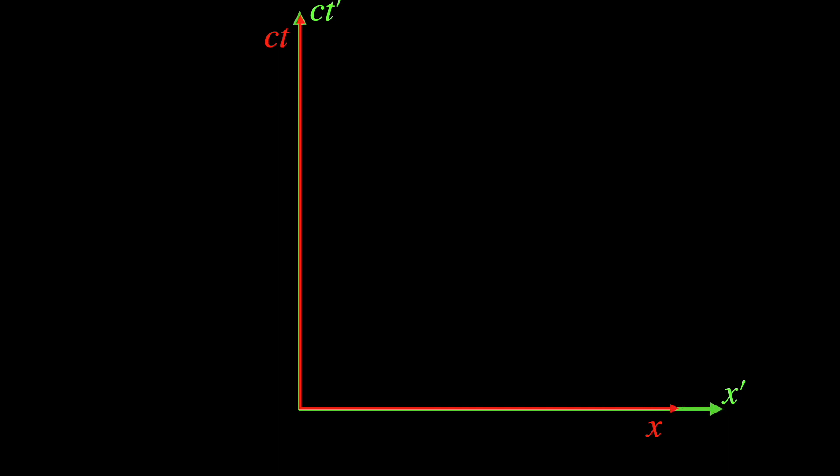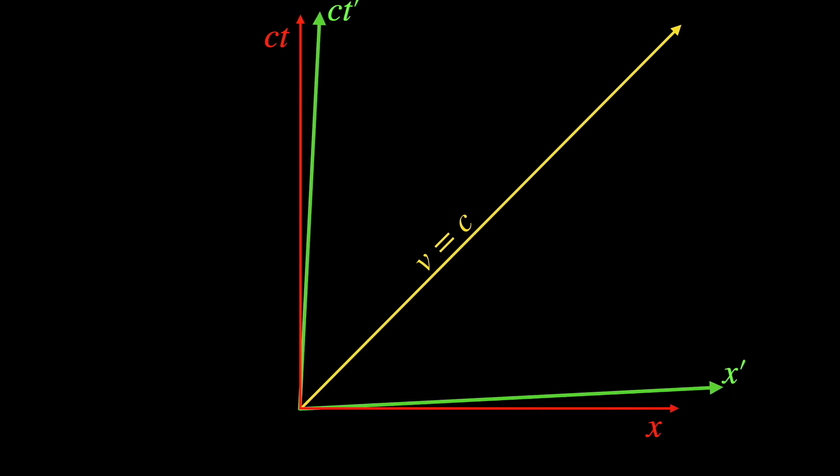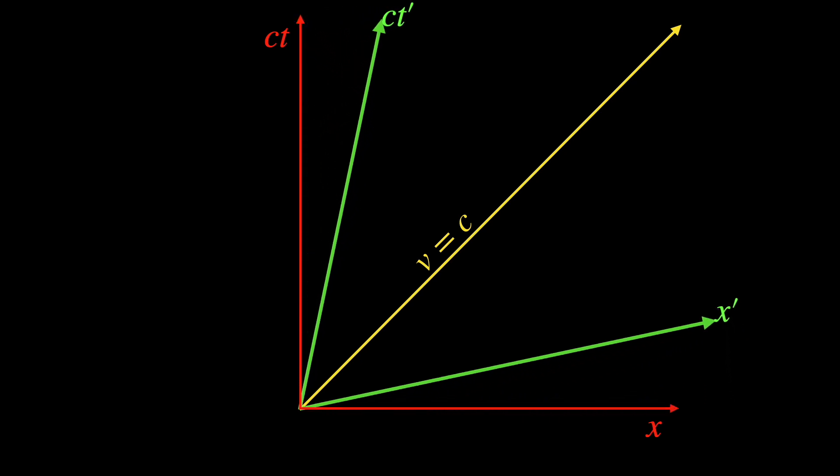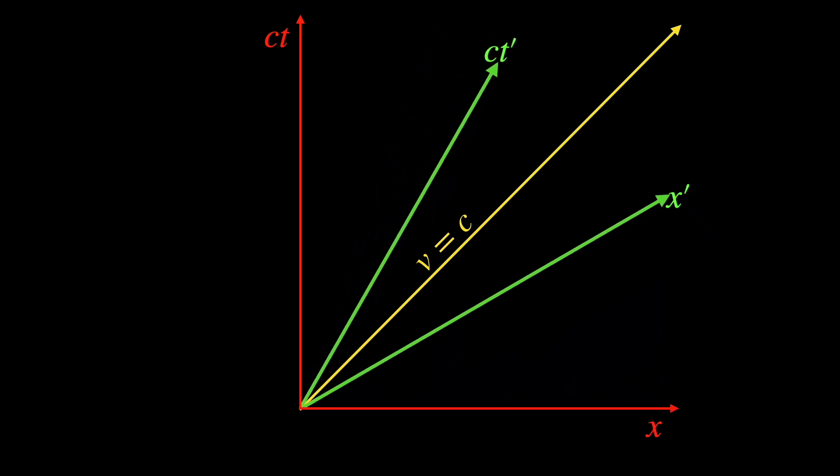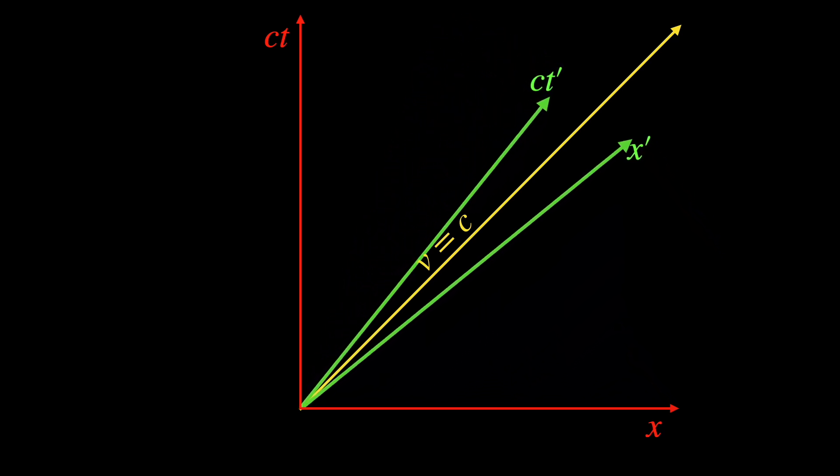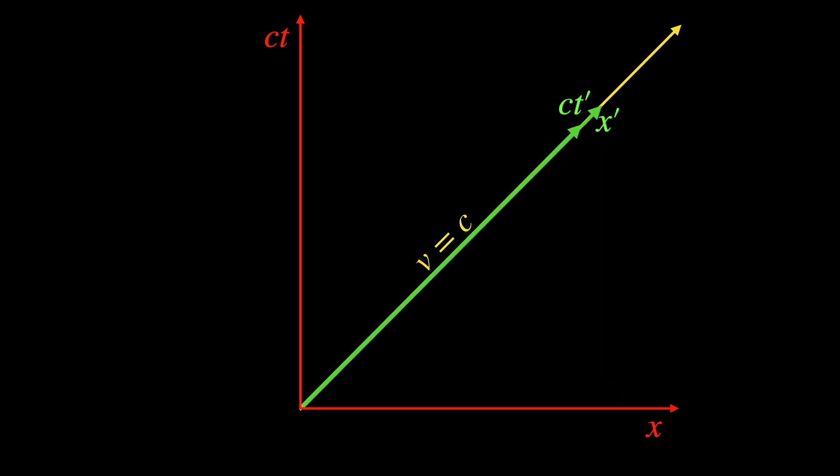As this other frame moves with higher and higher speeds, the Lorentz transformation process makes its space and time axis tilt more and more towards the light cone, eventually both touching the light cone at the speed of light.